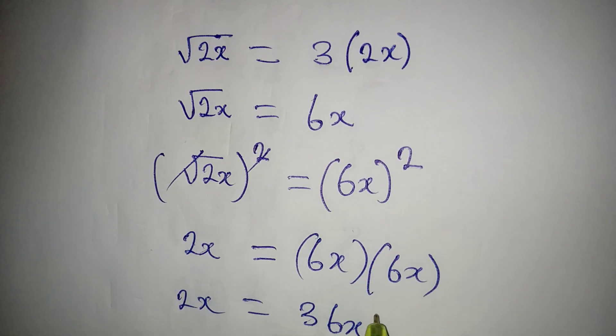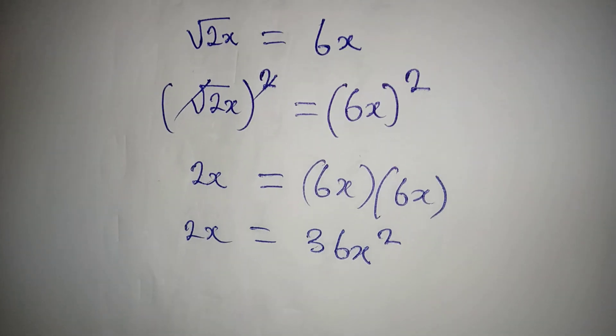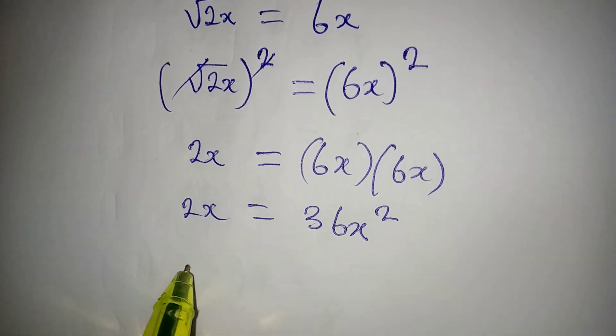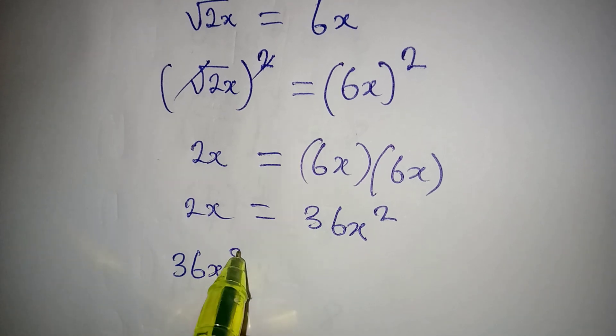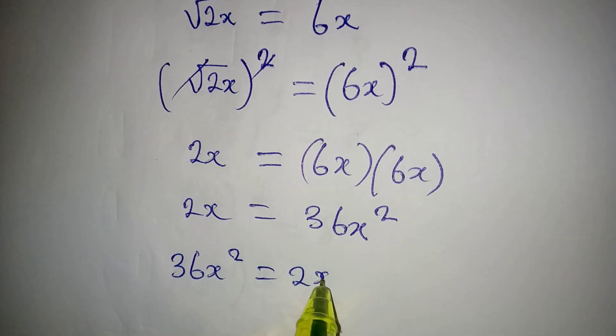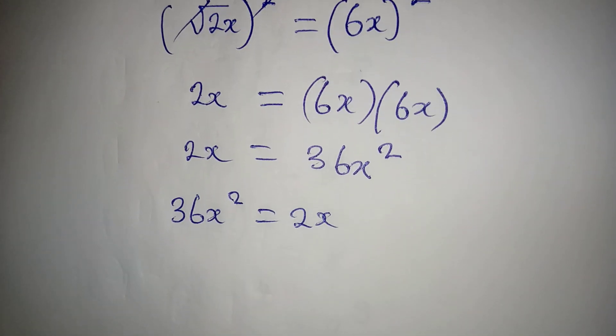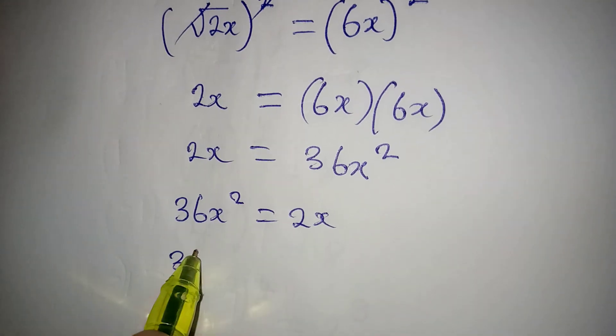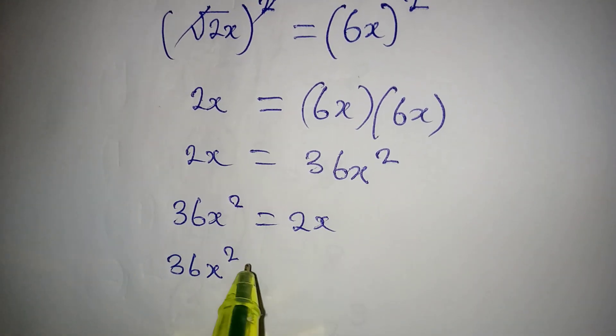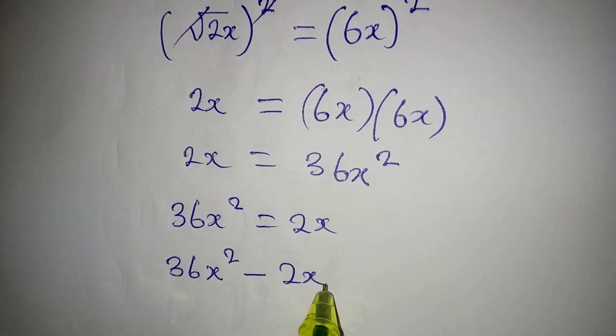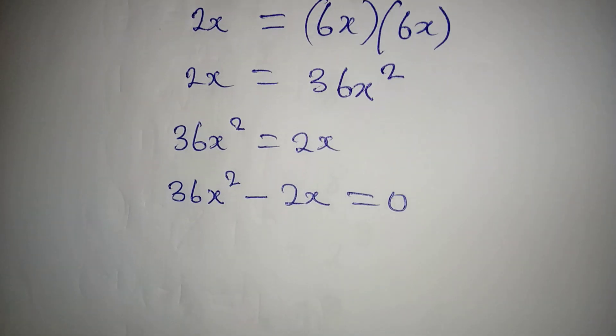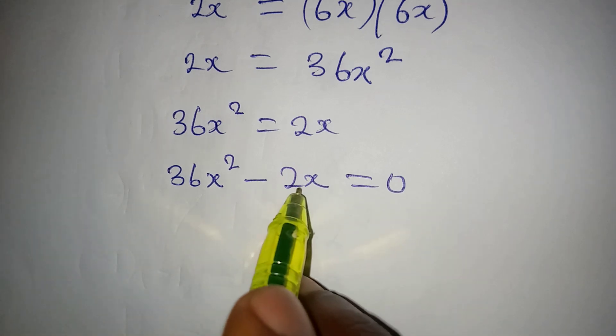Now 2x from here is equal to 36x squared. This also means that 36x squared is equal to 2x, and from here we can bring everything to the same side: 36x squared minus 2x is equal to 0.